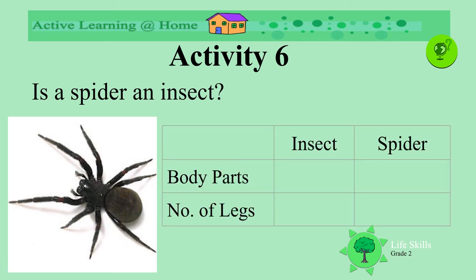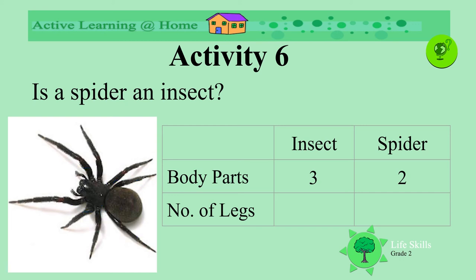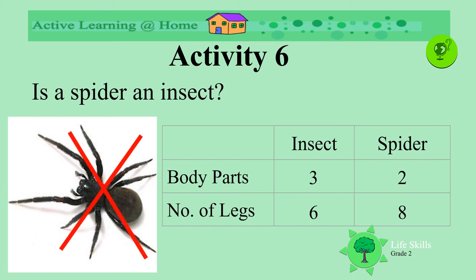Is a spider an insect? Let's investigate. Insects have three body parts — but a spider only has two. And how many legs do they have? An insect has six, but a spider has four on each side — eight legs. So a spider is not an insect. A spider is an arachnid.